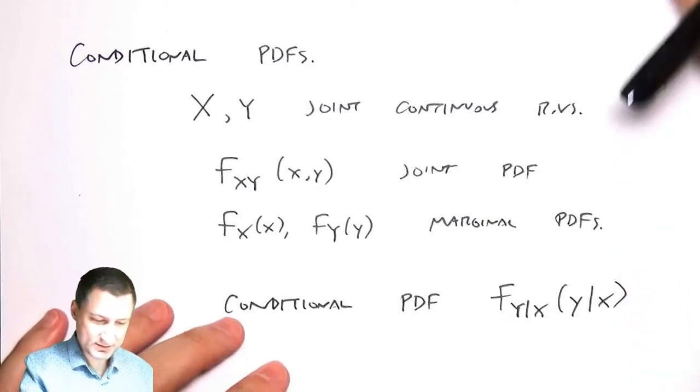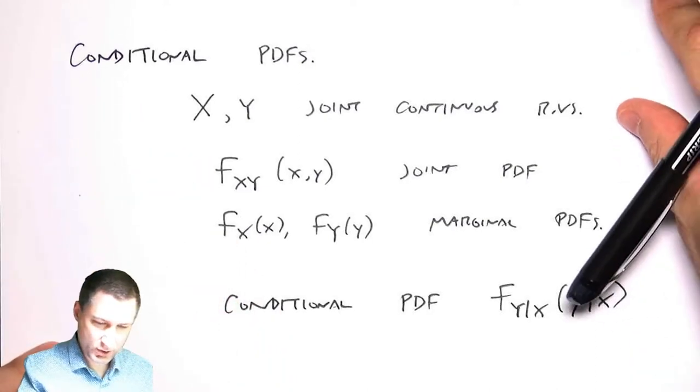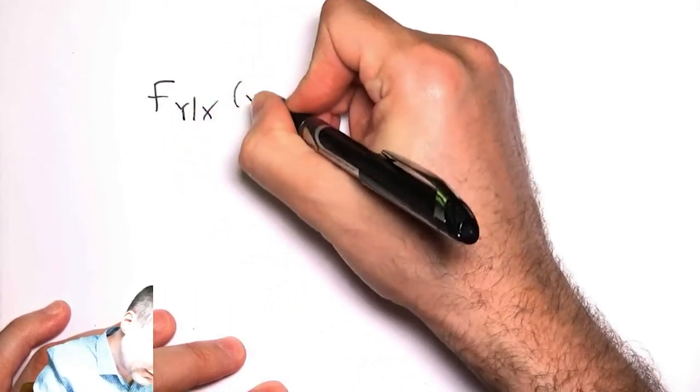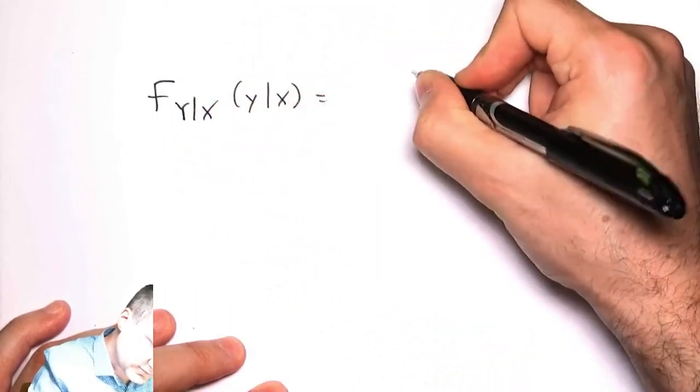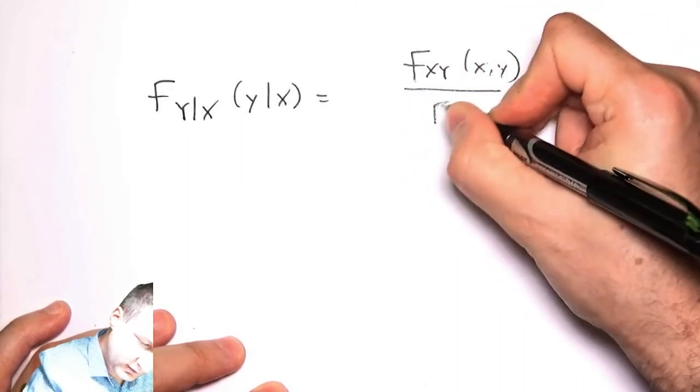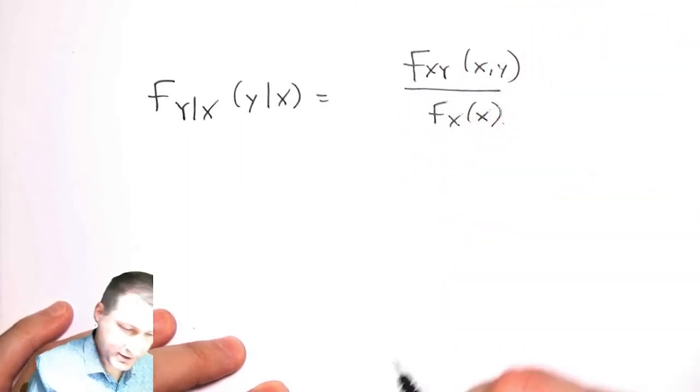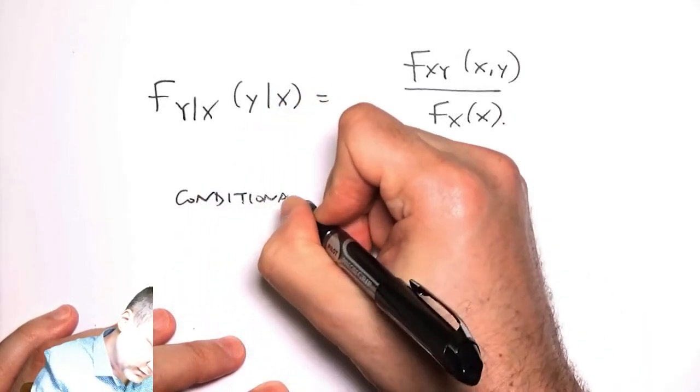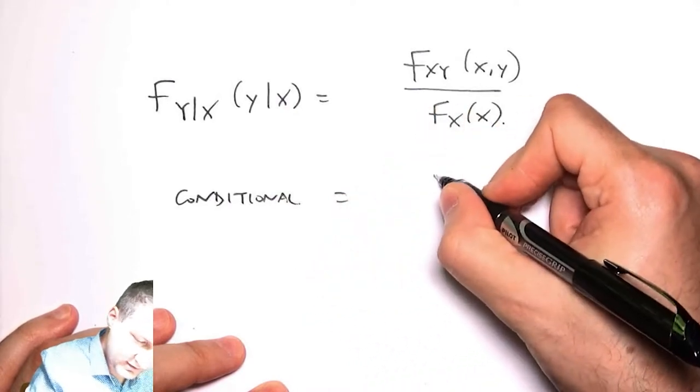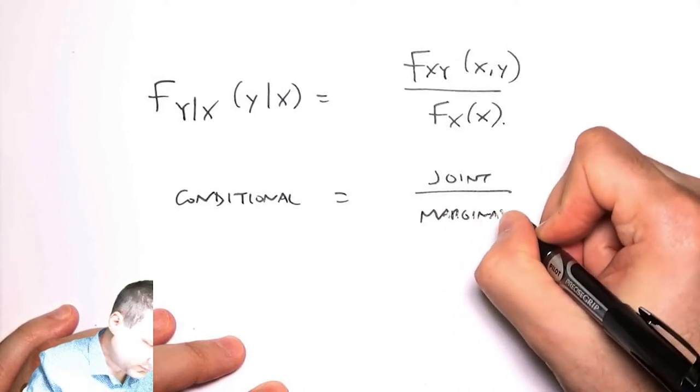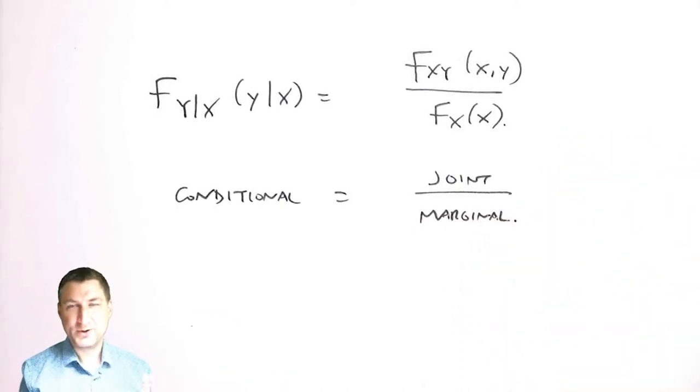The key relationship we should know by now is that the conditional PDF is equal to the joint PDF over the marginal PDF. This is like saying that conditional equals joint over marginal.